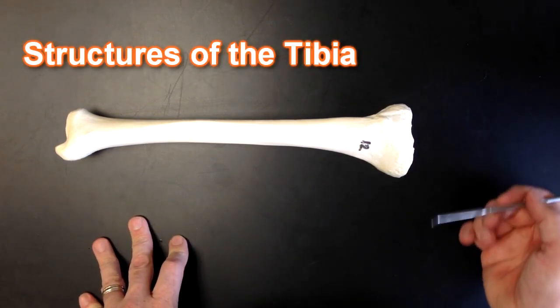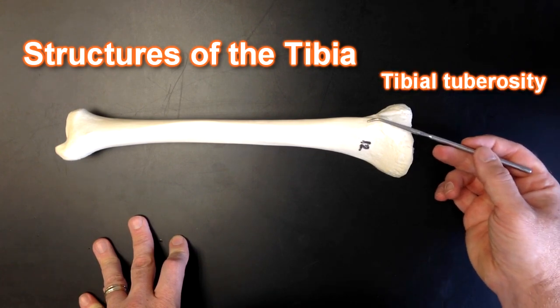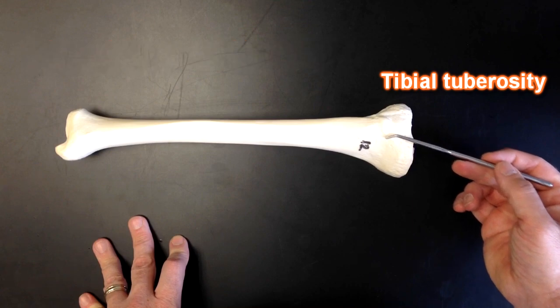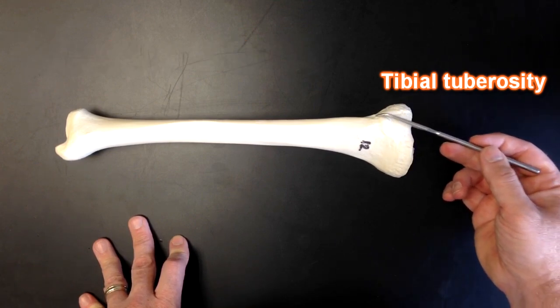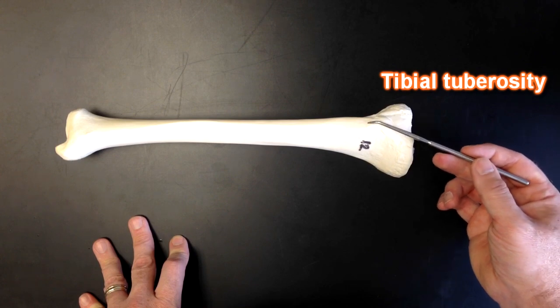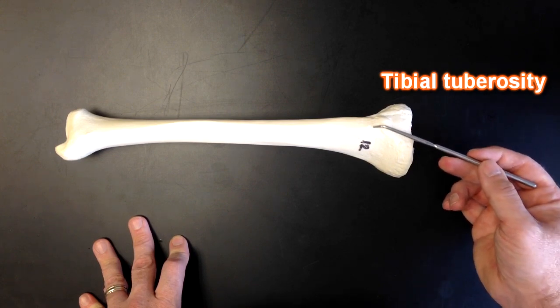Starting at the proximal end, we can see this structure right here. This is an important structure because this is going to be an attachment site for a set of muscles known as the quadricep muscles. Those quads will attach right here. This is the tibial tuberosity.